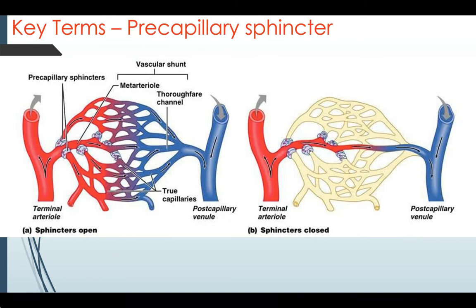The next key term is pre-capillary sphincters. When we're at rest, as shown in this diagram, blood flow to the working muscles is reduced — that's a result of these pre-capillary sphincters being closed. When we start exercising, however, these pre-capillary sphincters open, which increases blood flow throughout the working muscle, allowing more oxygen to be delivered.